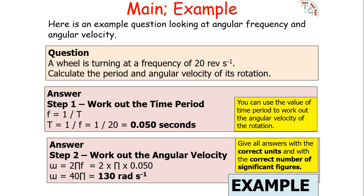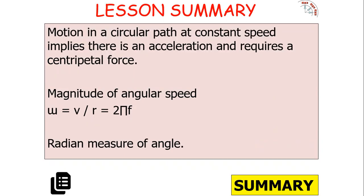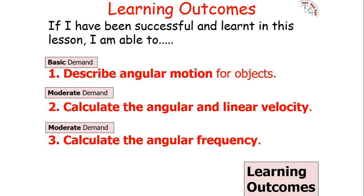In today's lesson, you should understand that motion in a circular path at constant speed implies an acceleration and requires a centripetal force. You can calculate angular speed and angular frequency from equations, and radians are the measure of angle used. You should be able to describe angular motion, calculate angular and linear velocities, and calculate angular frequency. In following lessons, we'll look at centripetal forces and centripetal accelerations. Have a lovely day!